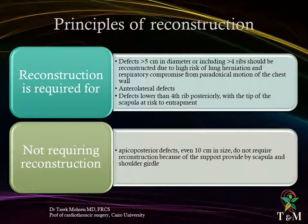Chest wall reconstruction is required for defects more than 5 cm, or including more than 4 ribs, to prevent lung herniation and respiratory compromise from paradoxical motion of the chest wall, and trilateral defects. Defects lower than the 4th rib posteriorly with the tip of the scapula at risk of entrapment. It is not required in apical posterior defects, even 10 cm in size, because of the support provided by the scapula and shoulder girdle.